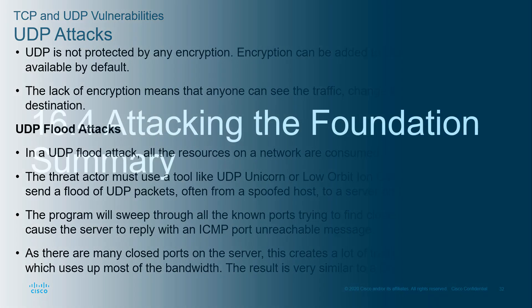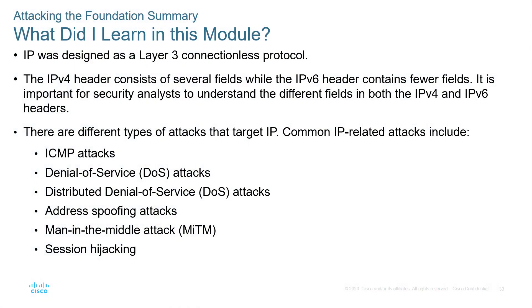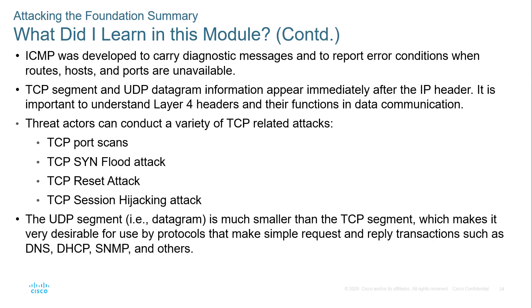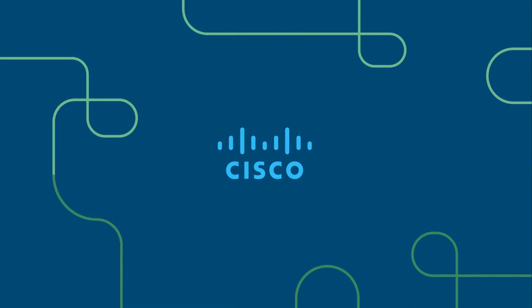That is it for this chapter. We looked at different types of attacks — ICMP, DDoS, man-in-the-middle, spoofing, and session hijacking. We looked at the headers for IPv4 versus IPv6, and for UDP versus TCP. We examined common TCP attacks and UDP-based attacks. If you have any questions or concerns, please feel free to reach out. Thank you.